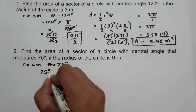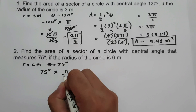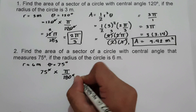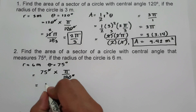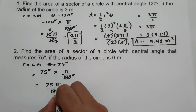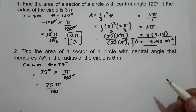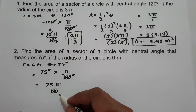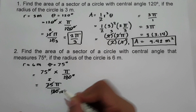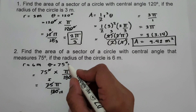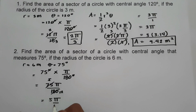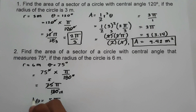We have 75 degrees multiplied by pi over 180 degrees. We cancel the degree symbol and get 75 pi over 180. Since 75 and 180 are divisible by 15, 75 becomes 5 and 180 becomes 12. Therefore, 75 degrees in radian is 5 pi over 12. This will be our central angle.